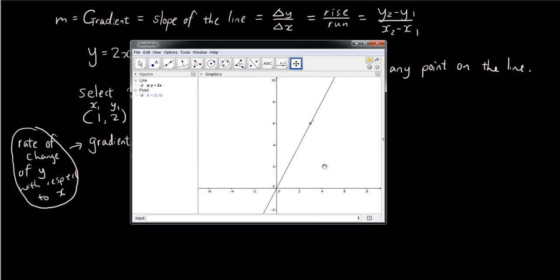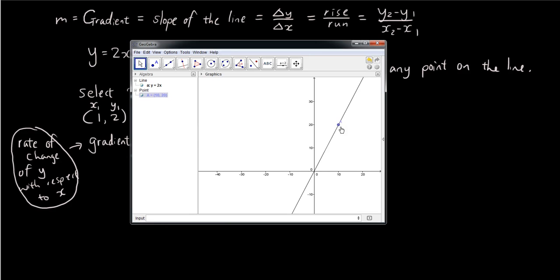You can pick when x is equal to 10 and y is equal to 20. You can let that be your x₁, y₁ and let, when x is equal to, let's say, 20 and y is equal to 40, let that be your second point. It doesn't matter which 2 points you pick, you'll get the same gradient.